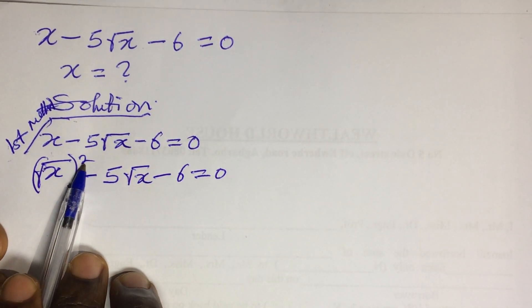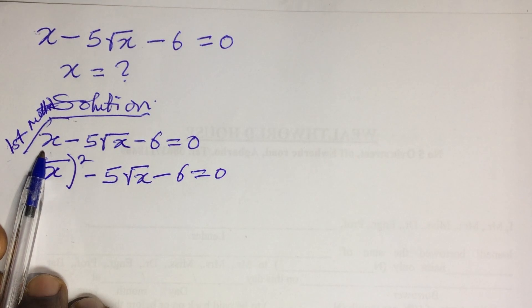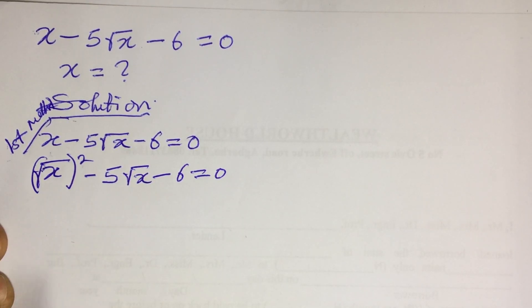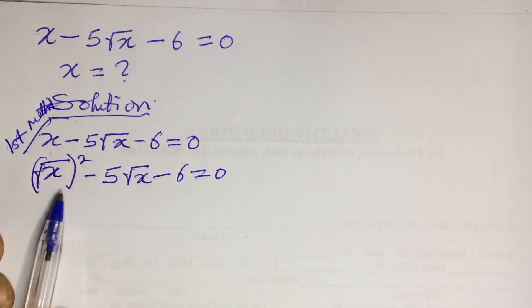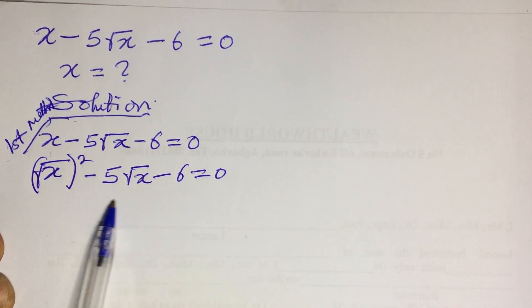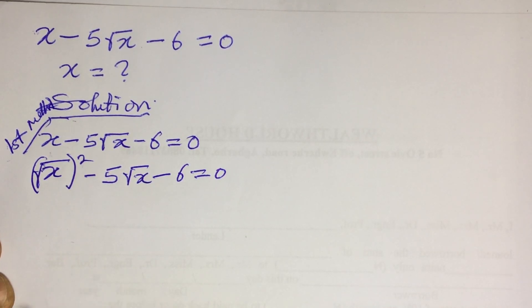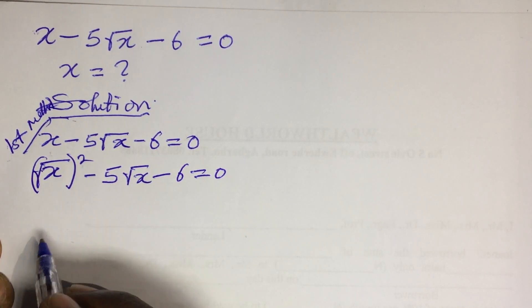This has not changed anything because the square can cancel the square root, giving us x again. Now that we have this form, we can see that the highest power makes this a quadratic equation. So how do we solve this? We solve it using the factorization method.